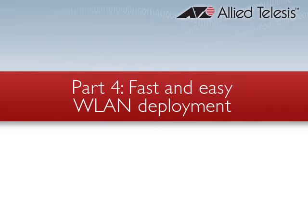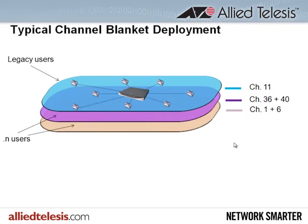Once the APs have been placed according to the deployment map and connected to the Extracom switch, the last step is to configure the switch. In our use case, we are deploying a 2.4GHz 802.11n channel blanket on radio 1, a 5GHz 802.11n channel blanket on radio 2, and a 2.4GHz 802.11bg channel blanket for legacy users on radio 3.